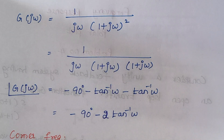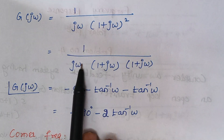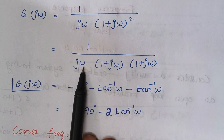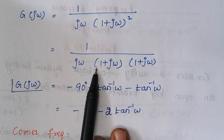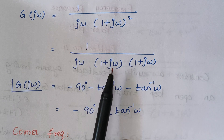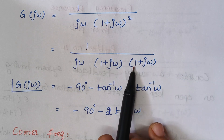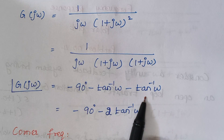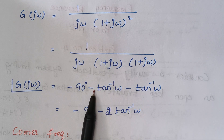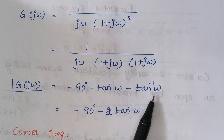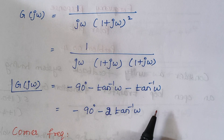Next, we frame the expression for phase. An omega in the denominator contributes an angle of minus 90 degrees when moved to the numerator. The term (1 + j omega) has angle tan inverse of omega over 1; moved to the denominator it becomes minus tan inverse omega. Similarly the second (1 + j omega) term gives another minus tan inverse omega. So the total phase is minus 90 minus 2 tan inverse omega.